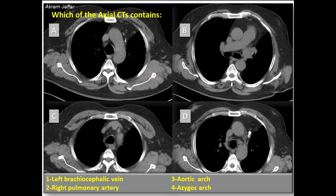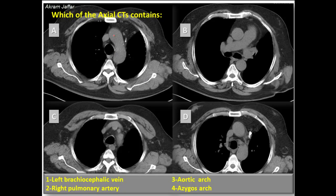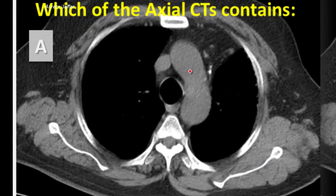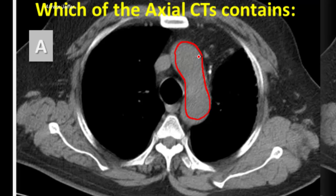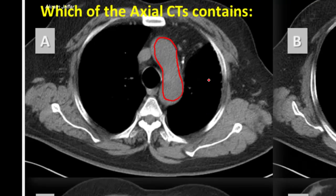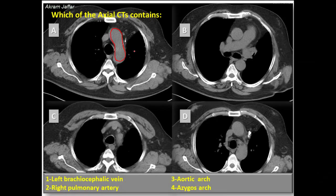These are axial CTs. Let's look at the axial CT in A. Here we can see that there is an arch-like structure, and this is located on the left side, and it is produced by the arch of the aorta. So the aortic arch matches with A.